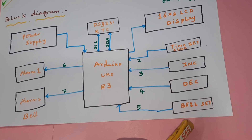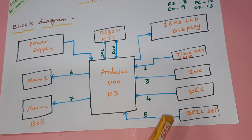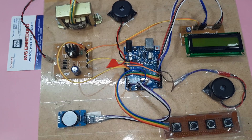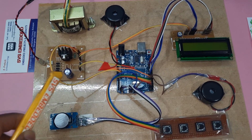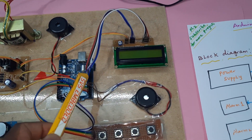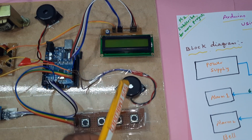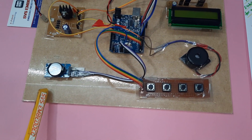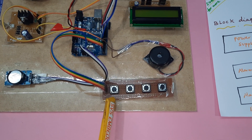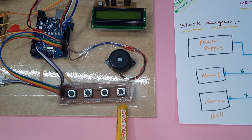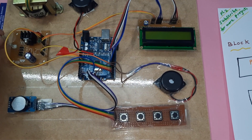We are using four push buttons to set the time interval as well as bell intervals — increment, decrement, set time, and bell alarm. For the hardware: 230V AC input, step-down transformer giving 9V AC output, bridge rectifier, filter capacitor, 7805 regulator, one LED, Arduino Uno R3 board, 16x2 LCD display, one alarm for beeps, and the DS3231 RTC IC.